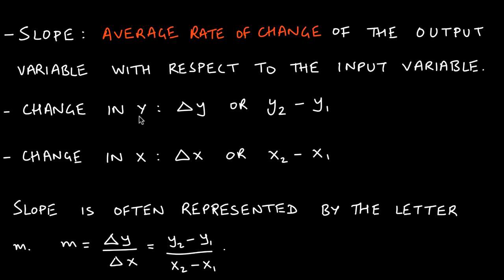The change in y can be represented a couple of different ways. Delta in science and mathematics is known as a change, so change in y can be represented by delta y — delta just means some change — or another way is y2 minus y1. A change in x can be represented similarly with delta x, meaning a change in x, or a second input minus a first input.